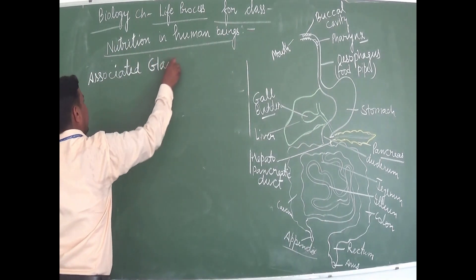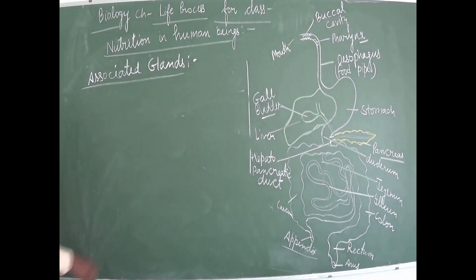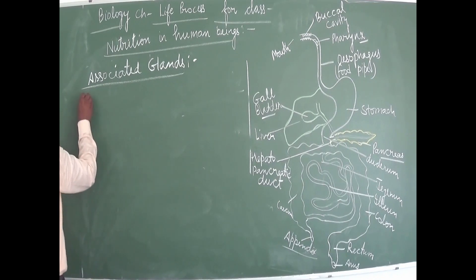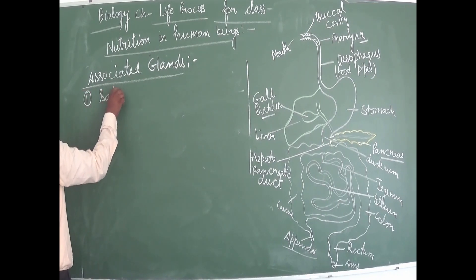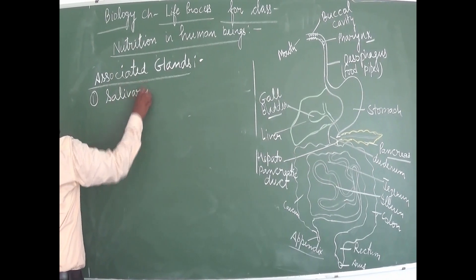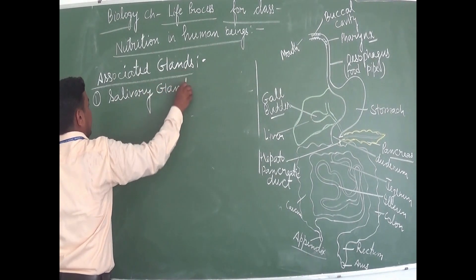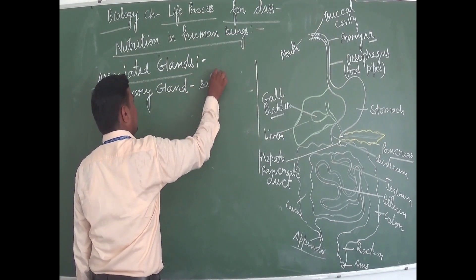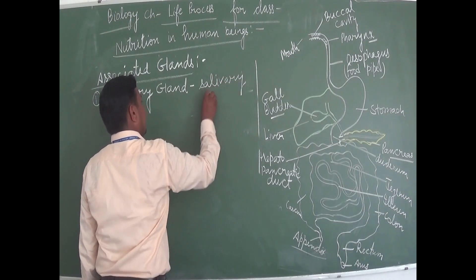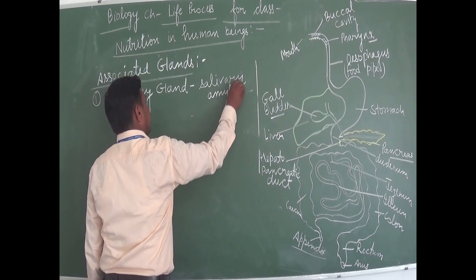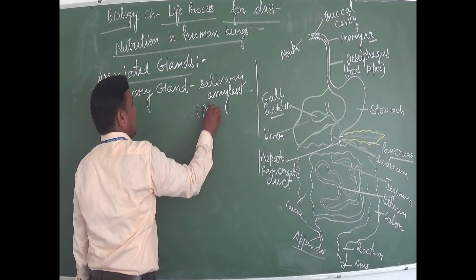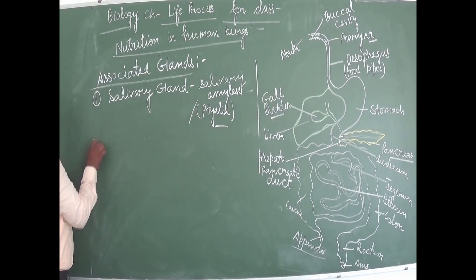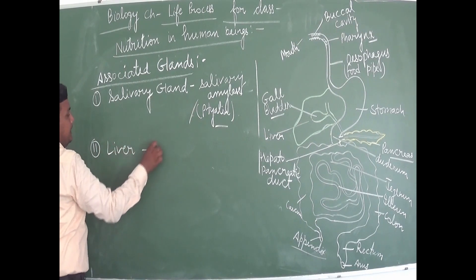Associated glands connected to the alimentary canal: first is the salivary gland, which releases the enzyme salivary amylase, also known as ptyalin. Second is the liver, which secretes bile juice.